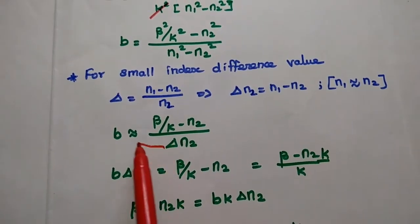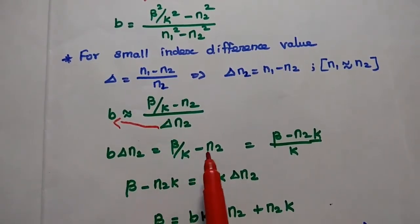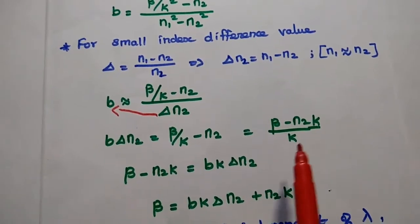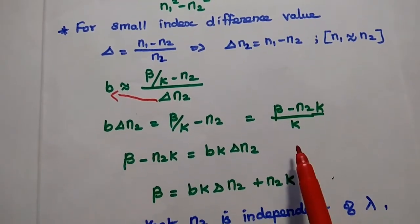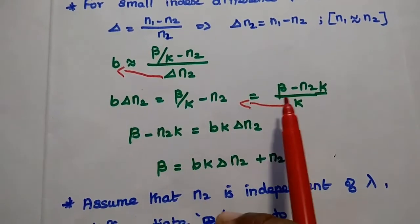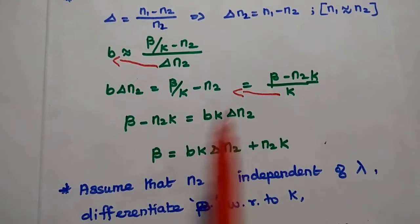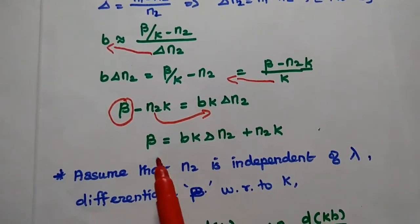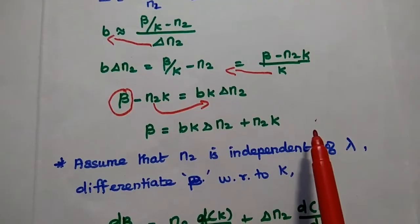From this, moving Δn2 to the other side: b·Δn2 = β/k − n2. Taking k as common in the denominator, this becomes (β − n2k)/k. Moving k to the other side: β − n2k = b·k·Δn2. Therefore, the propagation constant β = b·k·Δn2 + n2·k.